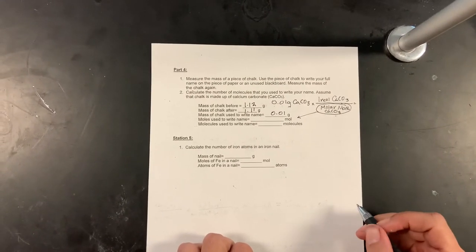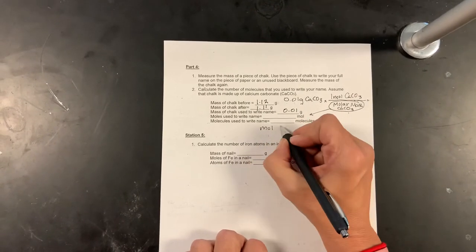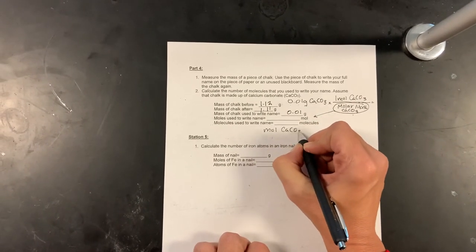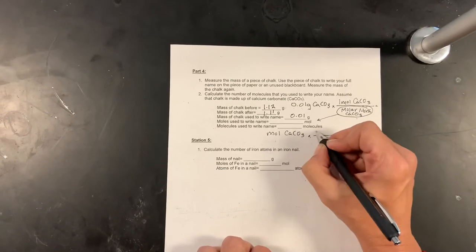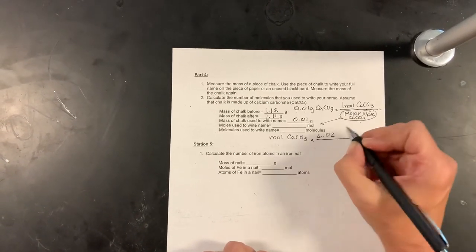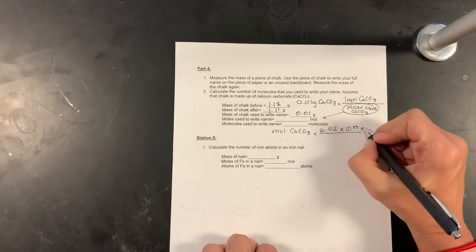Okay, once I get moles, it's very simple to get to molecules. So I'm going to take the moles of calcium carbonate that I just calculated, and I'm going to multiply that by Avogadro's number, 6.02 times 10 to the 23rd molecules.